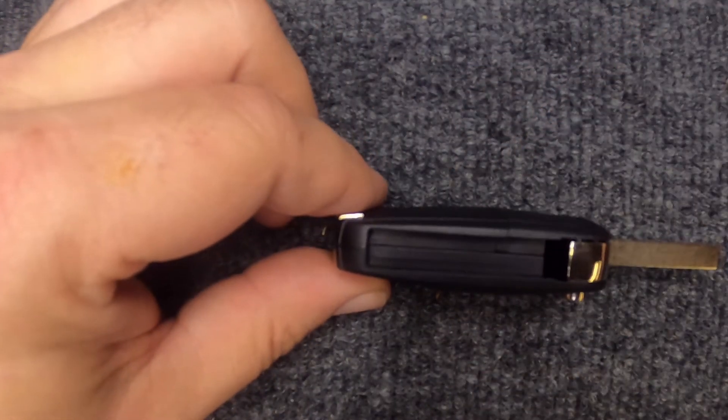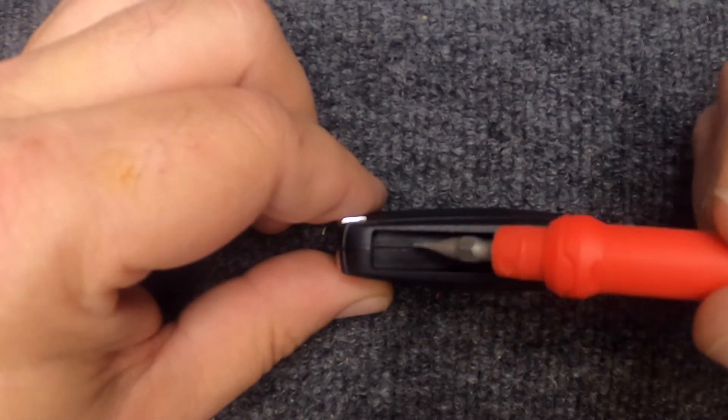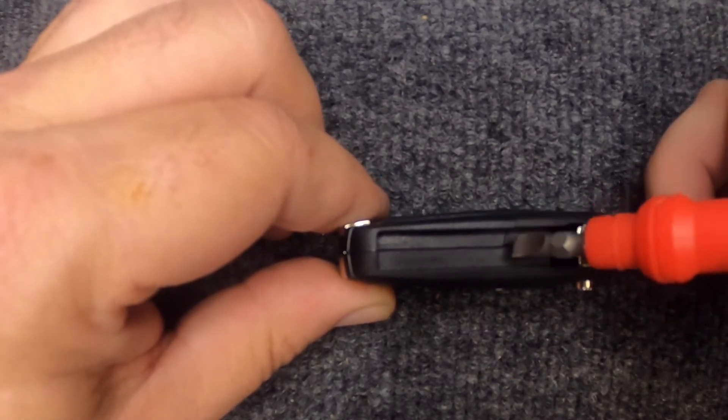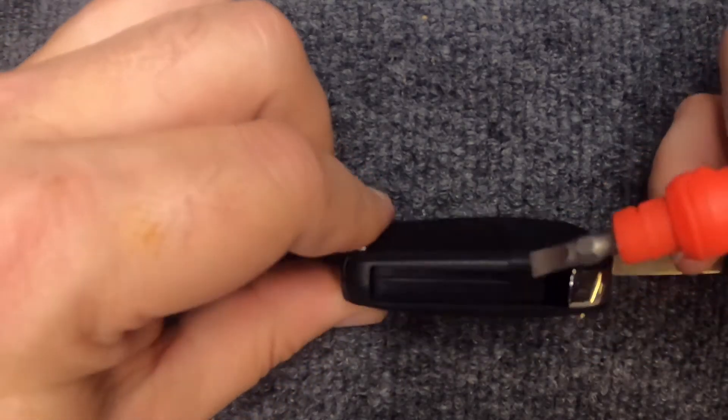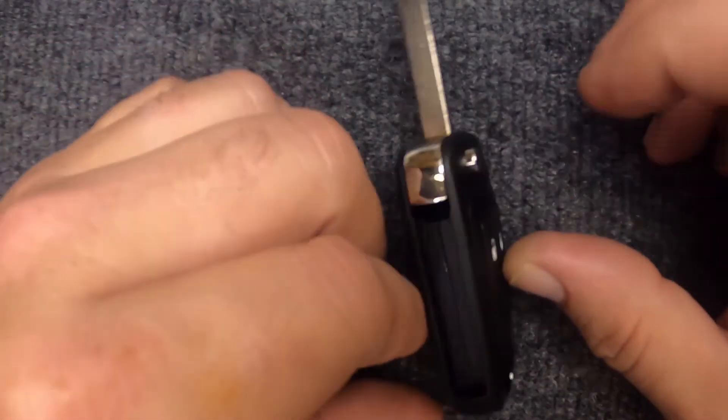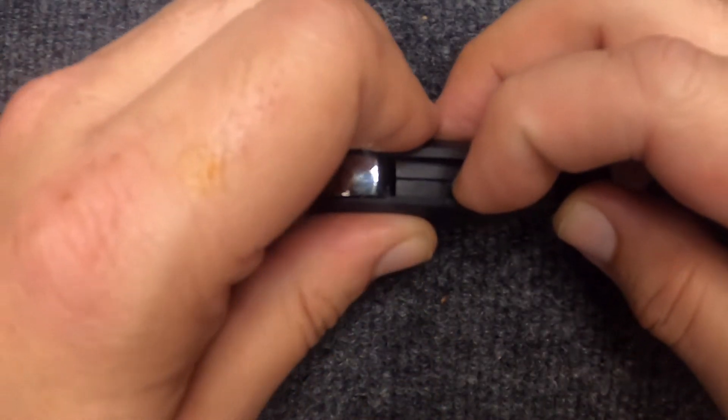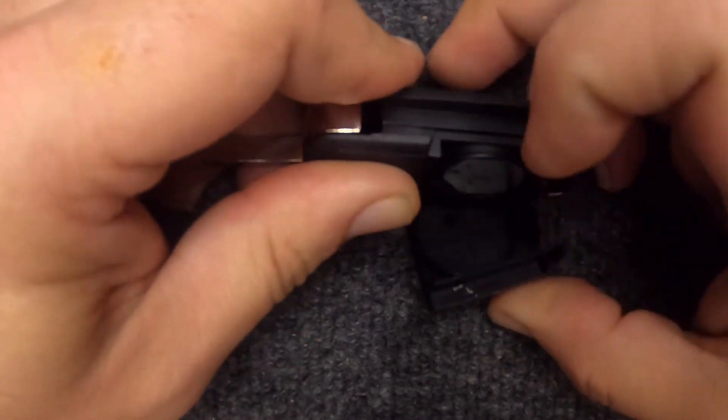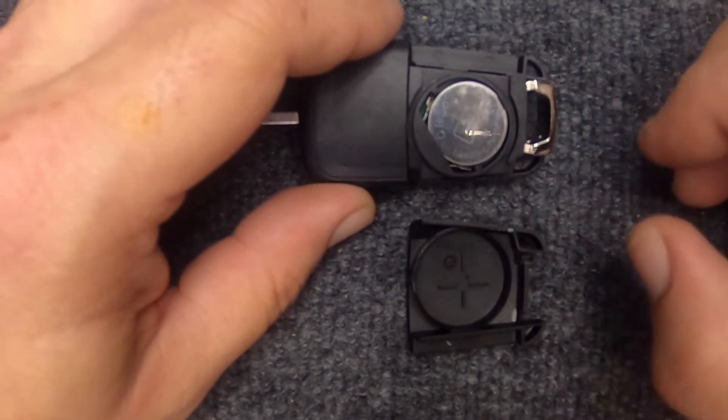Now that it's open, you'll notice the seam with two halves and a little line here. This corner right here is where you want to put a little bit of pressure with your finger. Let's push outward and you'll notice the cover just came off.